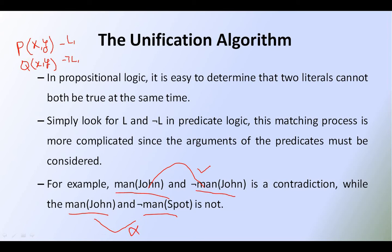Now let us take one more example: P of X comma Y and Q of X comma Y. Even the arguments are the same, the name of the literals are completely different — one is P and another one is Q. So suppose it is negation Q of Y, these two literals cannot get cancelled. We have to match the name of the literals, the arguments, and the number of arguments — then only we can get the contradiction.